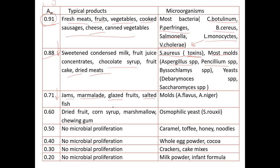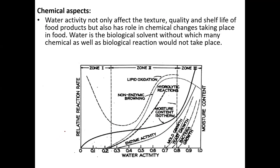At water activity of 0.60, dried fruit, corn syrup, marshmallow, and chewing gum can support osmophilic yeasts. Below a certain level, there is no microbial proliferation — products like milk powder, crackers, cake mixes, whole egg powder, caramel, toffee, and honey are safe if water activity is maintained at the appropriate level.